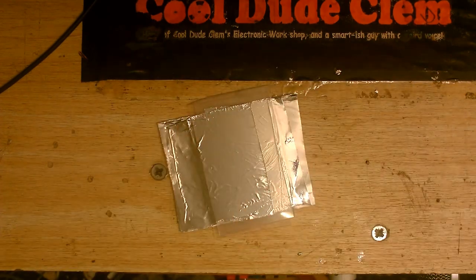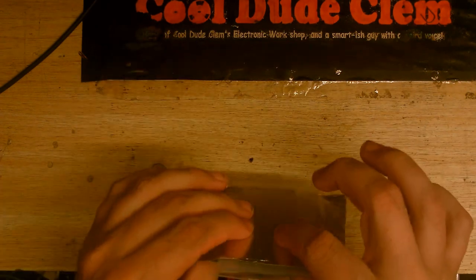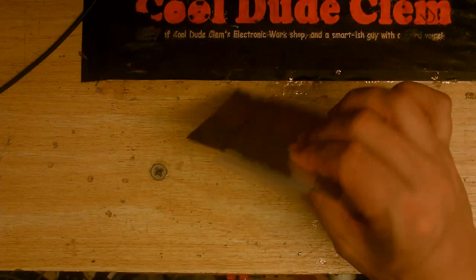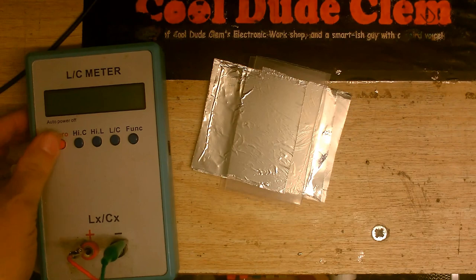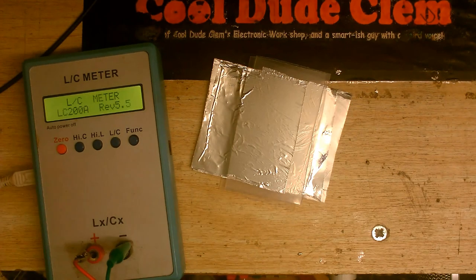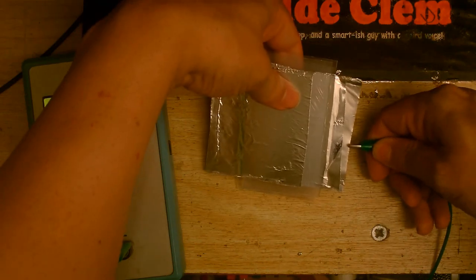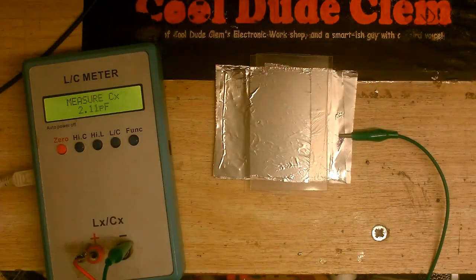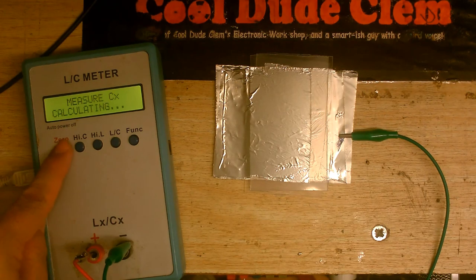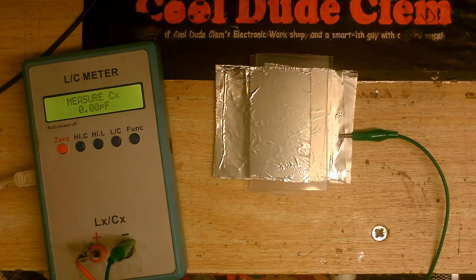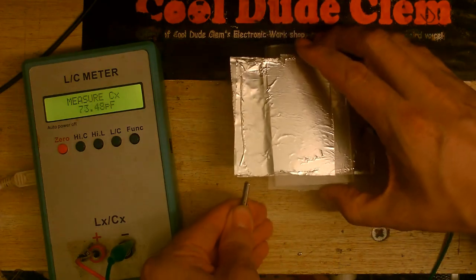Here is my DIY multi-layer capacitor. I have no idea what the capacitance actually is. Let's give it a little measure. Let's make sure that clip is making contact with both pieces of foil tape. Let's make sure this is zeroed out. Let's do the same for the other side.